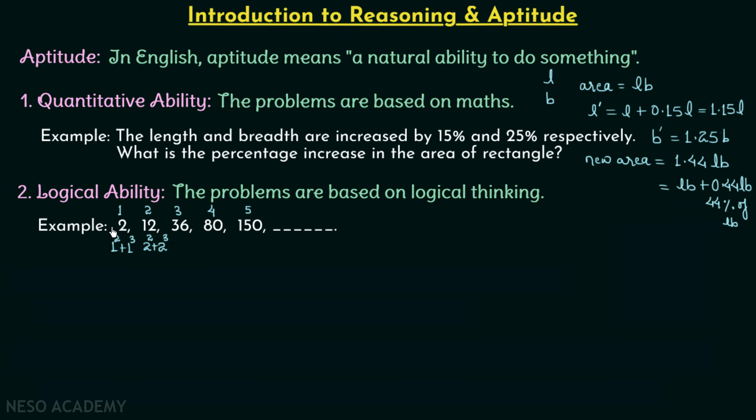For this we have 3 squared plus 3 cubed giving us 9 plus 27, which is 36. Similarly, 4 squared plus 4 cubed will be 80, 5 squared plus 5 cubed will be 150, and the sixth number will be 6 squared plus 6 cubed, which is equal to 36 plus 216. When you add it you will have 252. So the number 6 is 252 and we have obtained it by using our logical thinking.